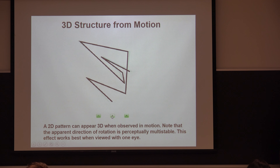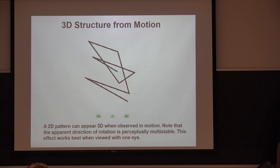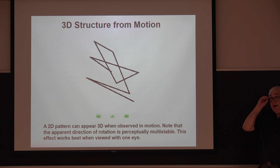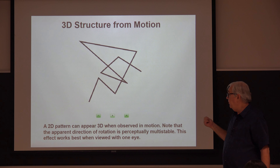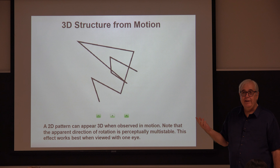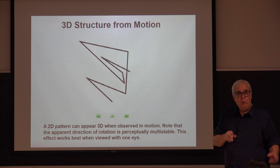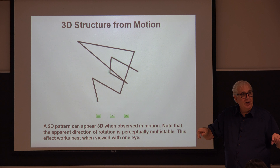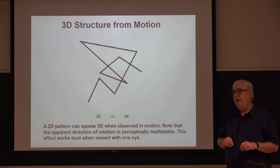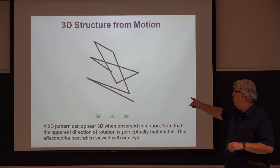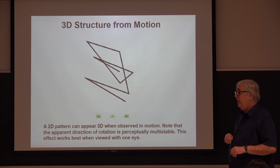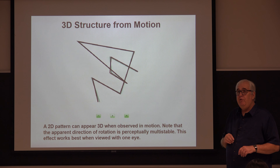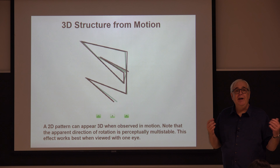Once set in motion, it looks like a 3D object. This phenomenon was discovered in 1957 by Hans Wallach — remember, we heard about him before when we talked about lightness perception. Wallach was the first person to discover this effect and he referred to it as the kinetic depth effect.